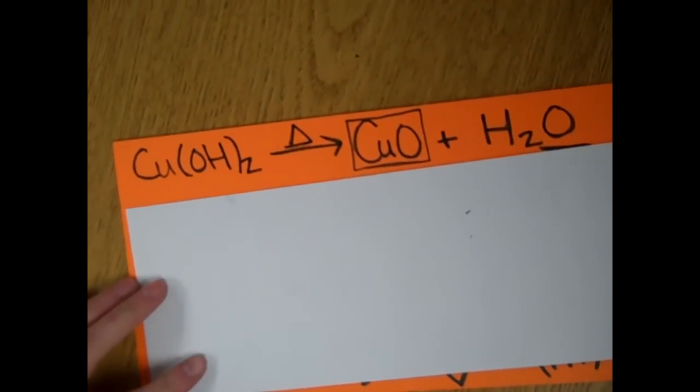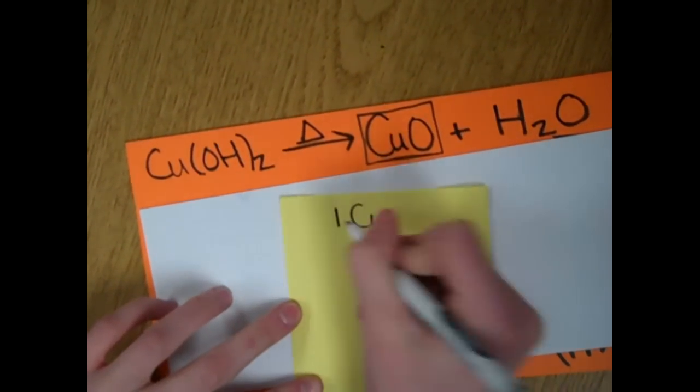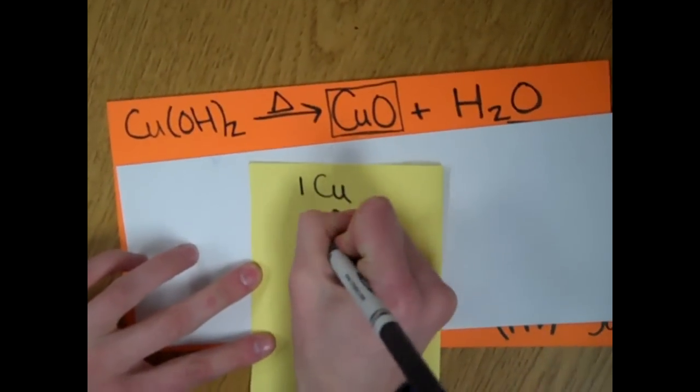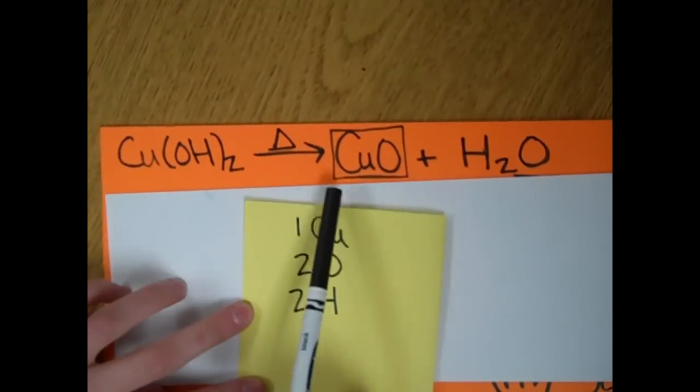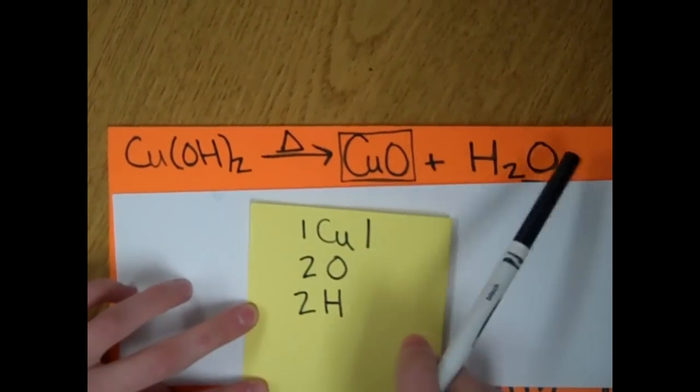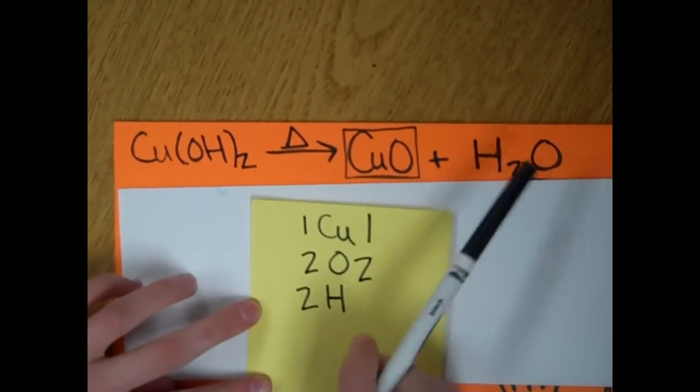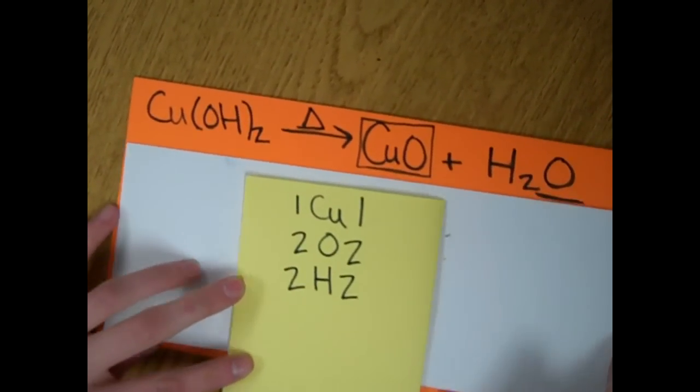So, then now, there's one copper, two oxygens, and two hydrogens on this side. And on the other side, there's one copper, two oxygens, and two hydrogens. So, now it is balanced.